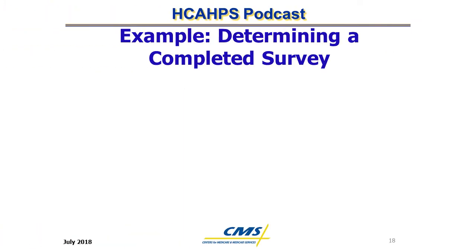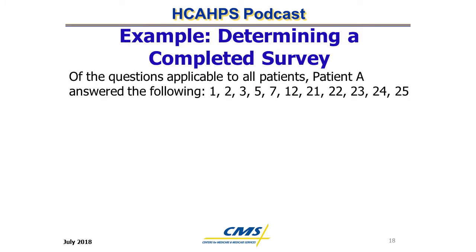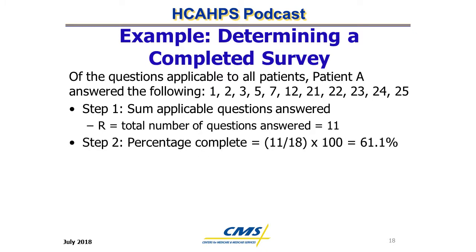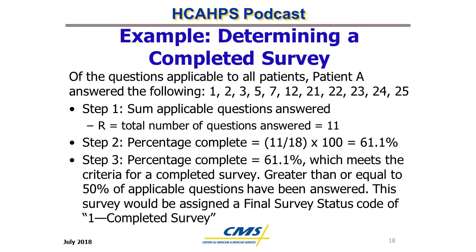Example: Determining a Completed Survey. Patient A answered the following questions applicable to all patients: 1, 2, 3, 5, 7, 12, 21, 22, 23, 24, and 25 — a total of 11 questions. Eleven divided by 18, multiplied by 100, yields 61.1%. Since 61.1% meets the 50% threshold, this survey is assigned a final survey status code of 1 (completed survey) and will be used in HCAHPS score calculations.